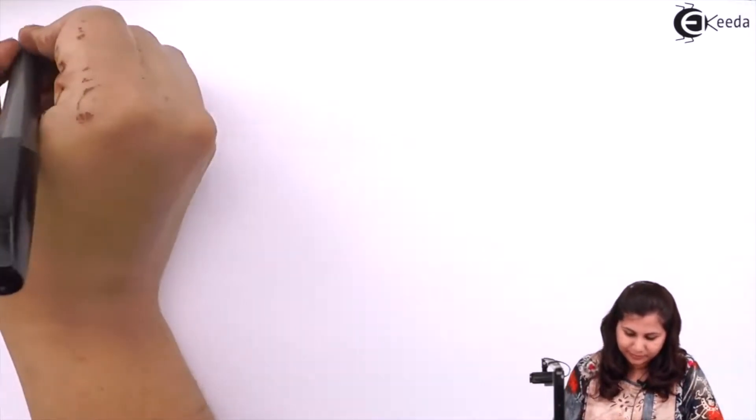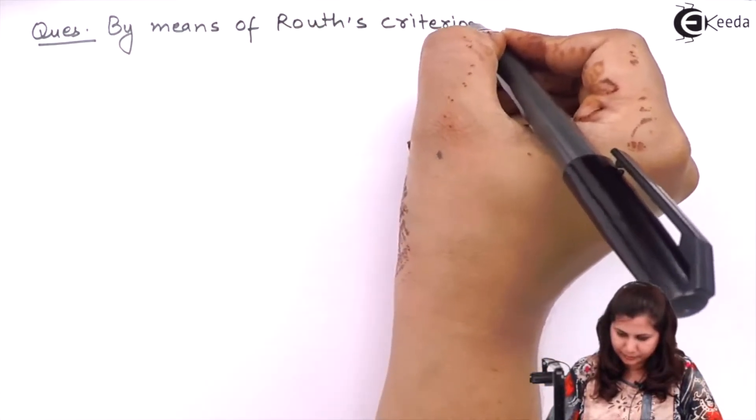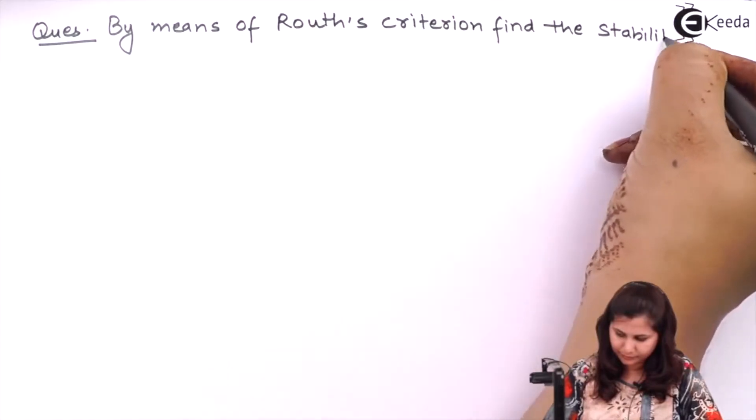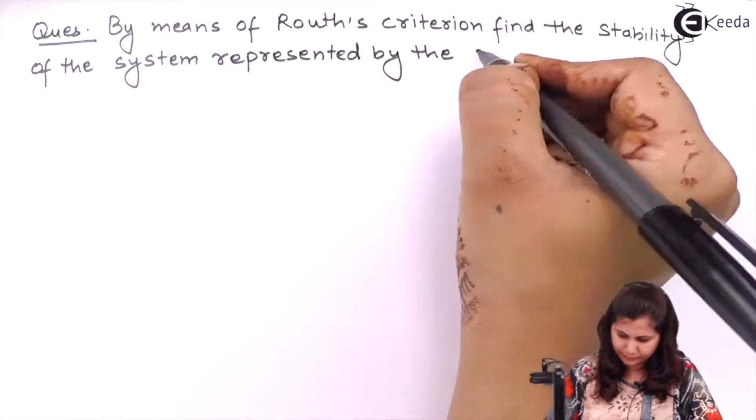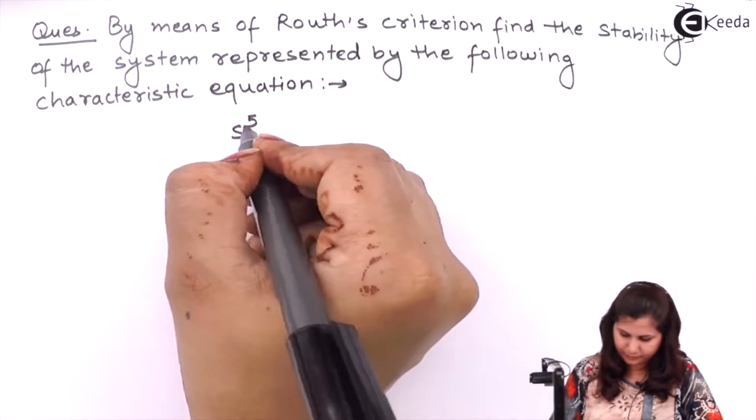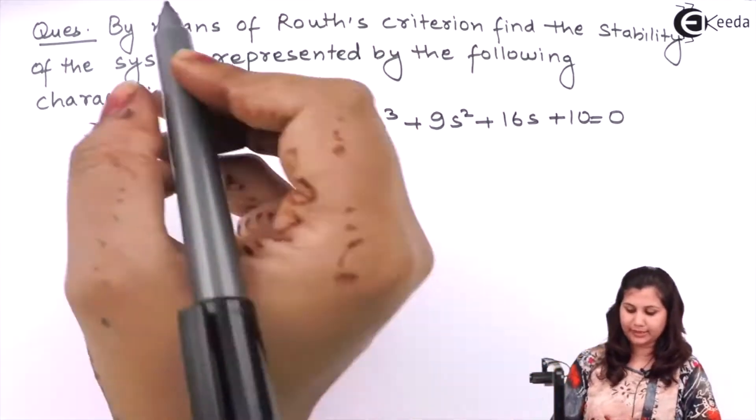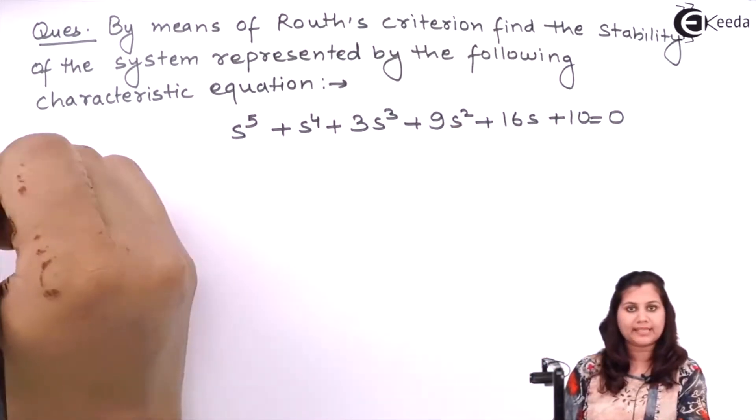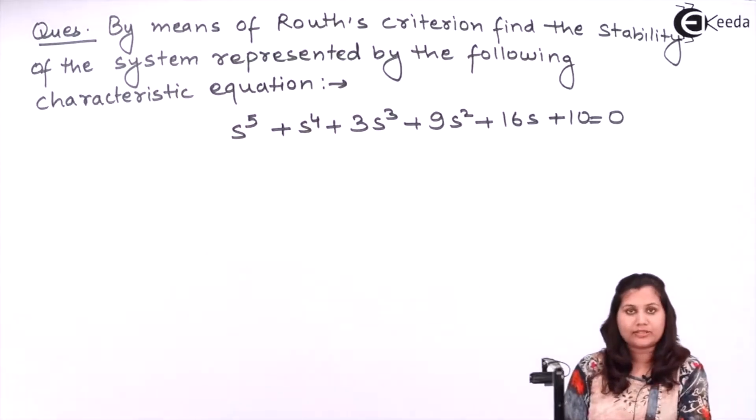Hello friends, in this video we are going to solve a problem on Routh-Hurwitz criteria. So let's see what is the problem. By using Routh-Hurwitz criteria, we have to find the stability of the system which is represented by the following characteristic equation: s^5 + s^4 + 3s^3 + 9s^2 + 16s + 10 = 0. So this is the characteristic equation of the system.